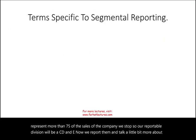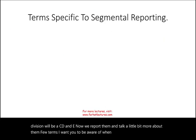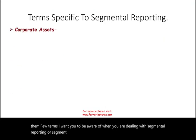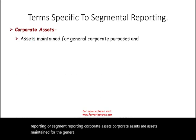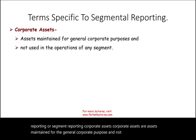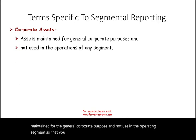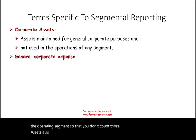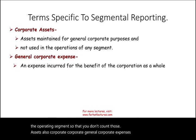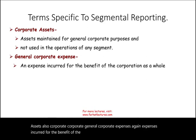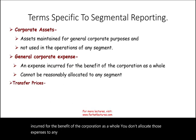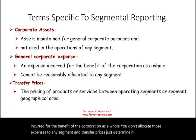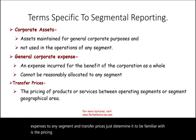A few important terms in segment reporting: Corporate assets are assets maintained for general corporate purposes and not used in any operating segment — you don't count those. General corporate expenses are expenses incurred for the benefit of the corporation as a whole — you don't allocate them to any segment. Transfer prices refer to the pricing of products between operating segments or geographical areas when one division sells to another.